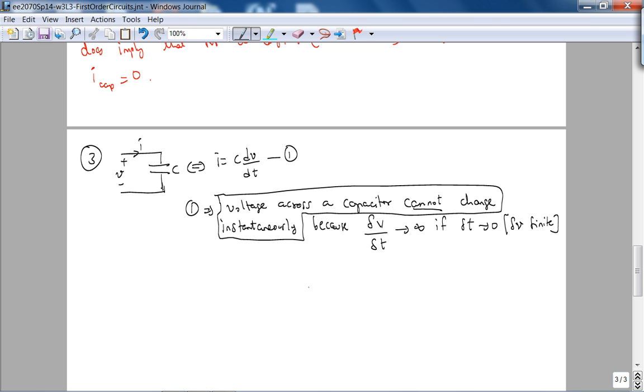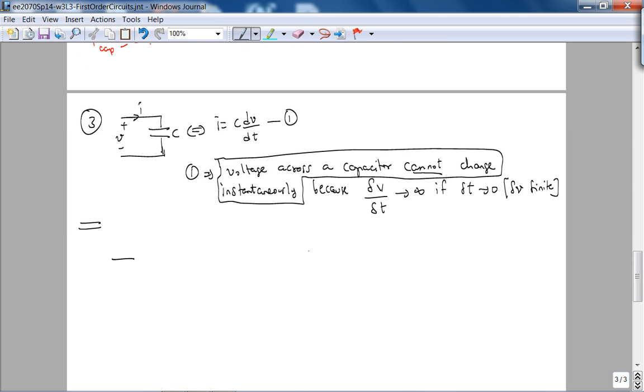Let's draw the picture. So, here is C, here is V, here is I, this implies I equals C dV/dt. Let's call this equation 1. Equation 1 implies voltage across a capacitor cannot change instantaneously, because delta V divided by delta T tends to infinity, if delta T, so if there is an instantaneous change, it goes to 0, delta V finite. So, you need an infinite amount of current to make this voltage change in instantaneous or 0 time, and it's not physically possible. So this is the third idea. So the way we see all these ideas in action is if we look at the RC circuit.